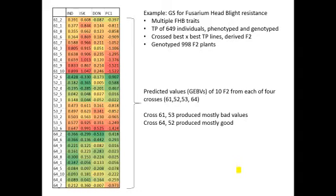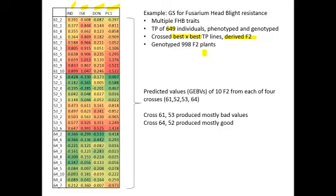Here's an example of looking at predicted values of individuals from my program doing genomic selection for fusarium head blight in wheat. There are multiple fusarium head blight traits, such as index, ISK, and toxin levels. We take these individual traits, run them through principal component analysis, which gives a nice integrative measure of individual value based on all those traits. We had a training population of 649 individuals, all phenotyped and genotyped. We took the best of those 649 and made best-by-best crosses, derived 998 F2 individuals, genotyped them, and predicted their value based on the model built from the training population data.